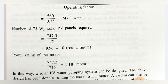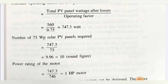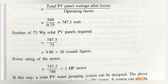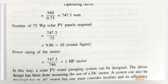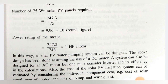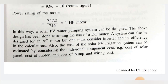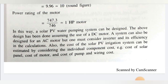Number of 75 Wp solar panels required: 747.3 W ÷ 75 W per panel = 9.96, which rounds up to 10 solar panels. The power rating of the motor required: 747.3 W ÷ 746 W per HP ≈ 1 HP motor. So the designed solar PV water pumping system requires 10 panels of 75 Wp and a 1 HP motor.